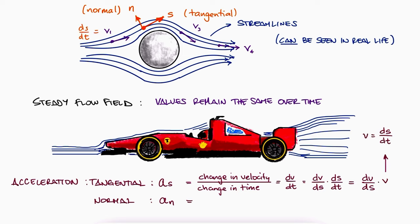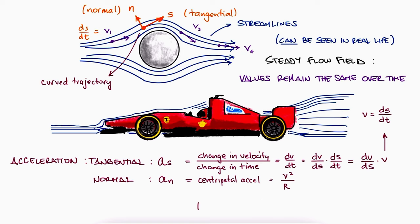The normal acceleration would be the centripetal acceleration, just like any object on a curved trajectory — as you studied in your physics or dynamics course. In other words, it would be v squared over the radius of curvature r. We'll leave this normal acceleration for later.